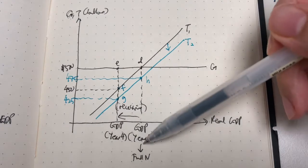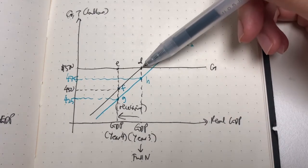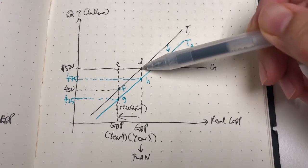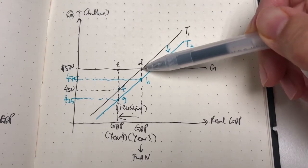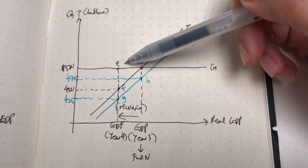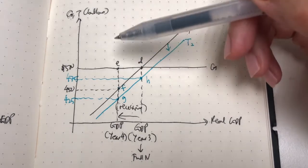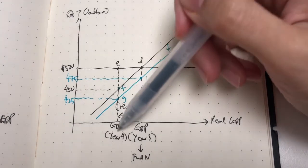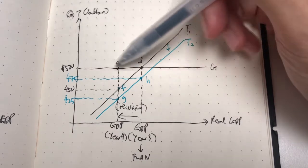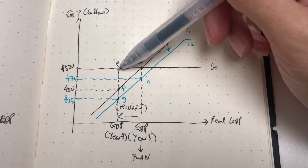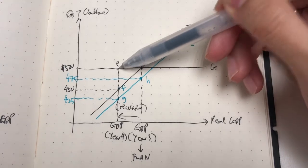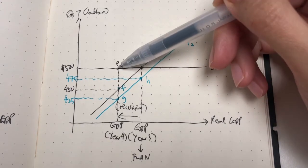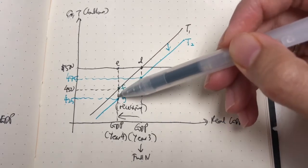At year three, with full employment, government spending at point D is $500 billion, exactly equal to the tax amount also at $500 billion — a balanced budget. At year four, with a recession, we compare government spending ($500 billion at point E) with the tax revenue that would have occurred at the full employment level. The government had reduced its tax revenues, giving us point G, but we need to look at the tax at the full employment level, which is point H.